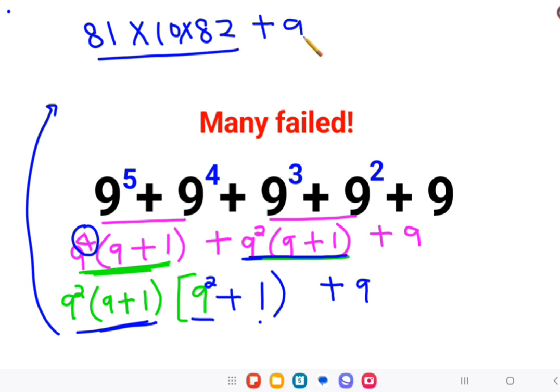And whatever is the answer for this entire product gets added to 9. So now see, instead of calculating every particular value, you just have to find out the multiplication product of 81 into 82 and that value is 6642 into 10 plus 9.